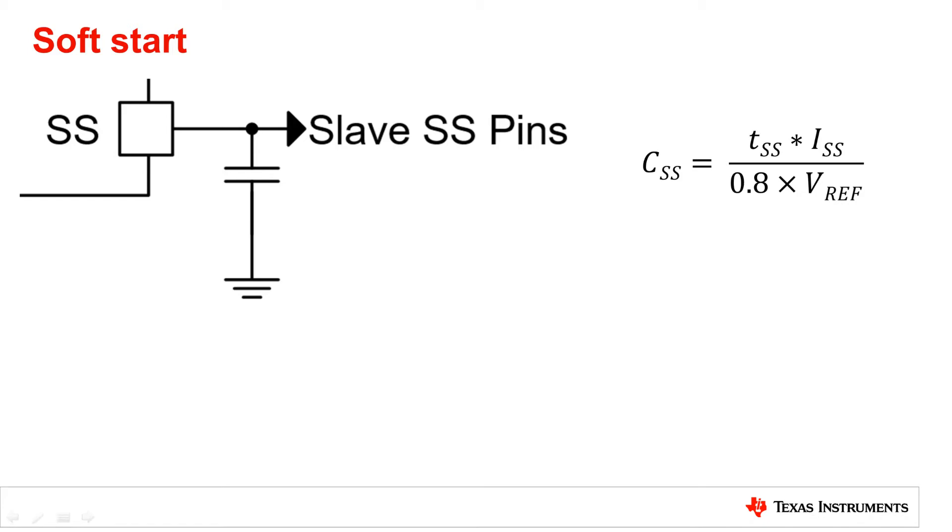The first change will be to the soft start equation. On the right, the soft start equation for a single device is shown. By simply multiplying the equation by n, which is the number of converters, the proper soft start capacitance can be found.